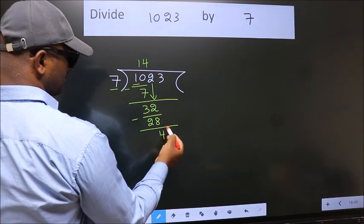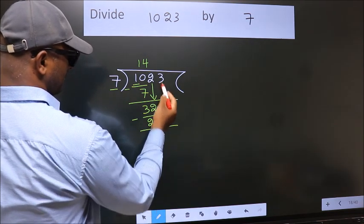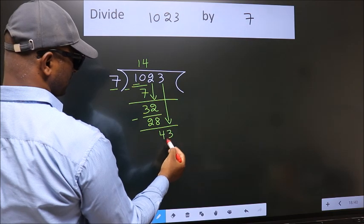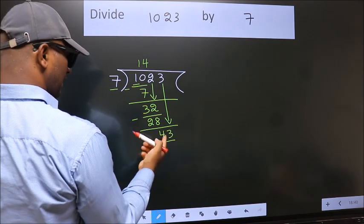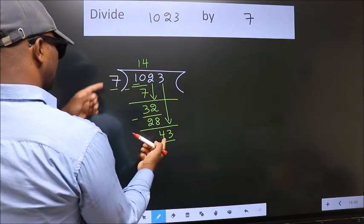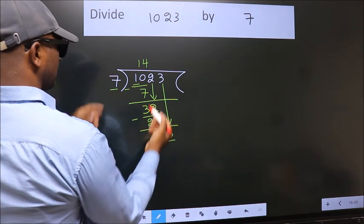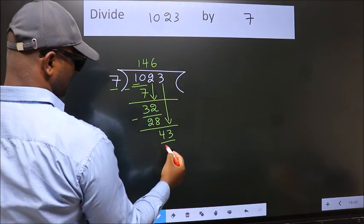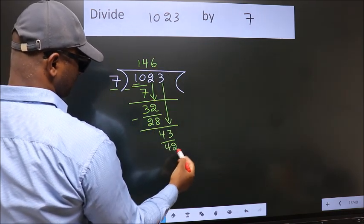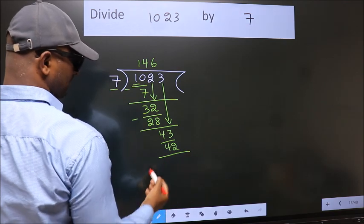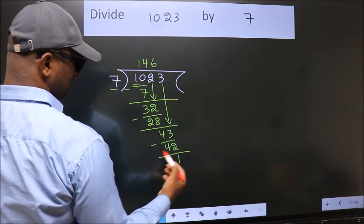After this, bring down the beside number. So, 3 down. So, 43. A number close to 43 in 7 table is 7, 6, 42. Now, we subtract. We get 1.